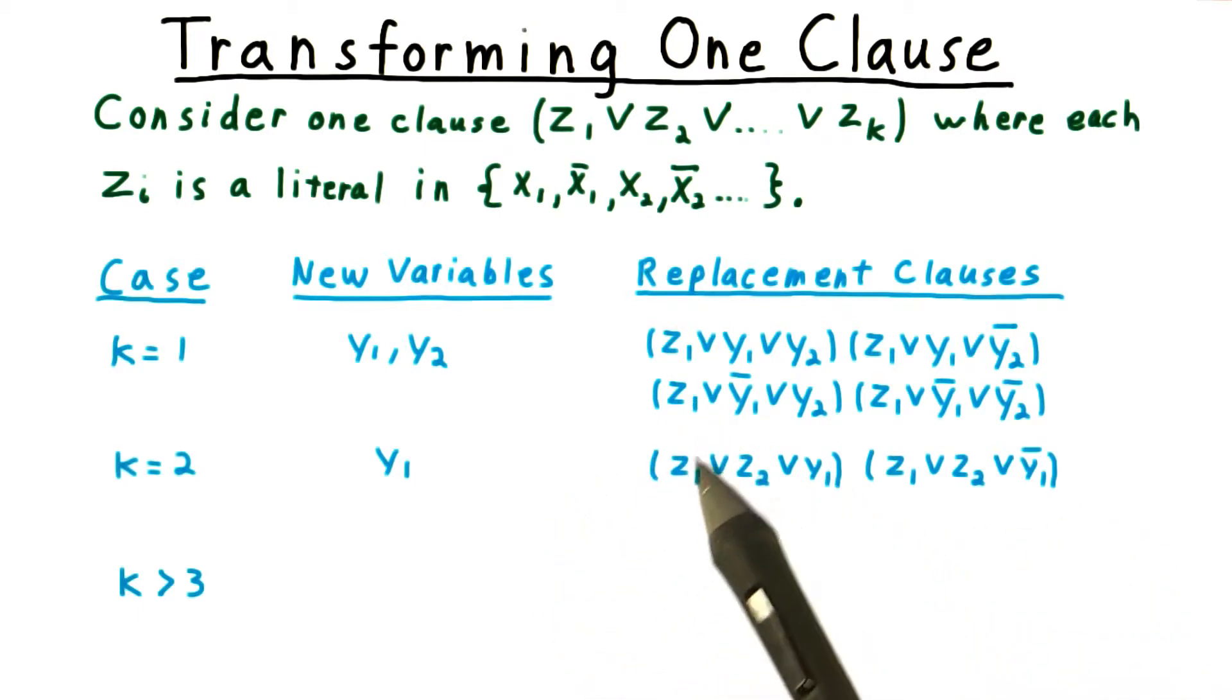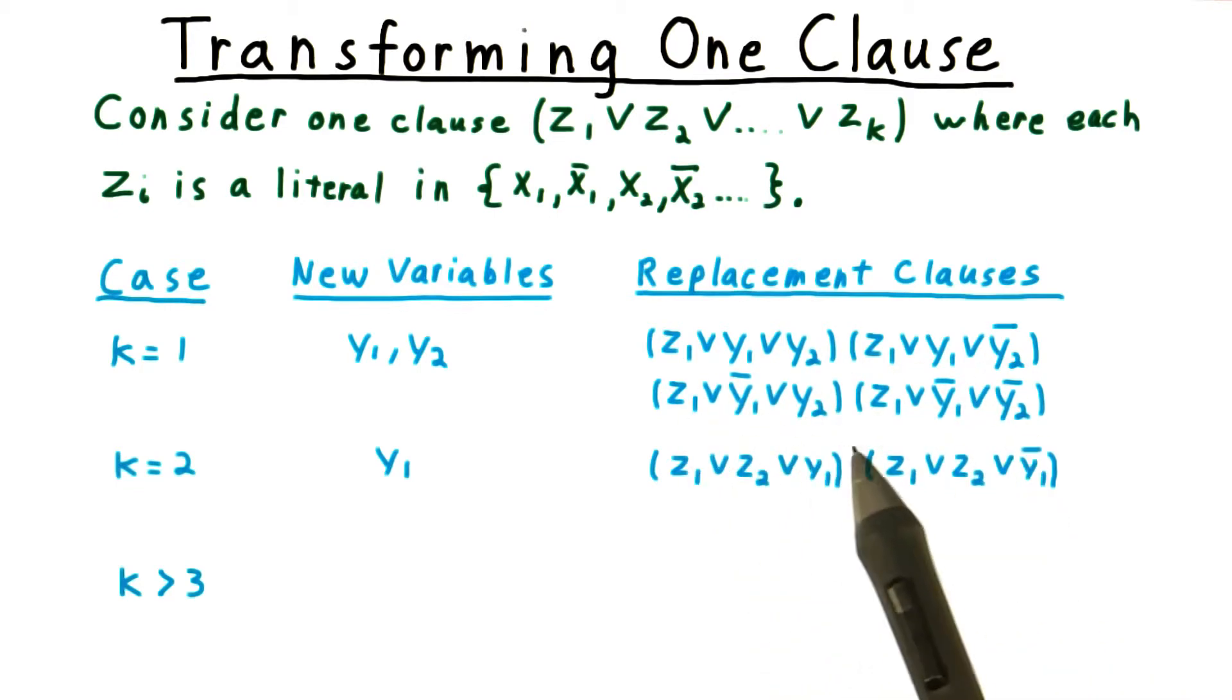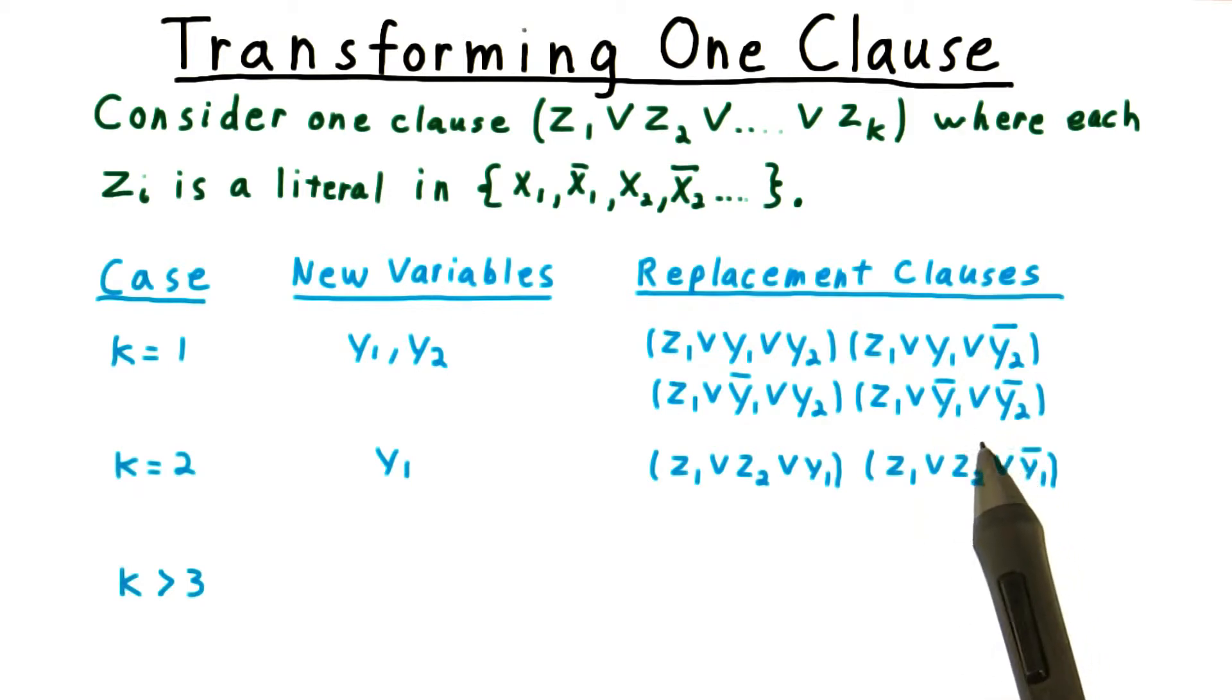that satisfies these four clauses, the Y literals have to both be false in one of these. And that then implies that Z1 is true.